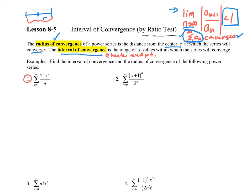Let's see how this works for number one. If I take the sum of all these terms — 2 to the n, x to the n, all over n — I want to put this into the ratio test. So I take the limit as n goes to infinity of the next term: 2 to the n plus 1, x to the n plus 1, all over n plus 1, divided by the current term. Dividing by that term means multiply by n all over 2 to the n, x to the n. I have to remember absolute values, and I want this to be less than 1.